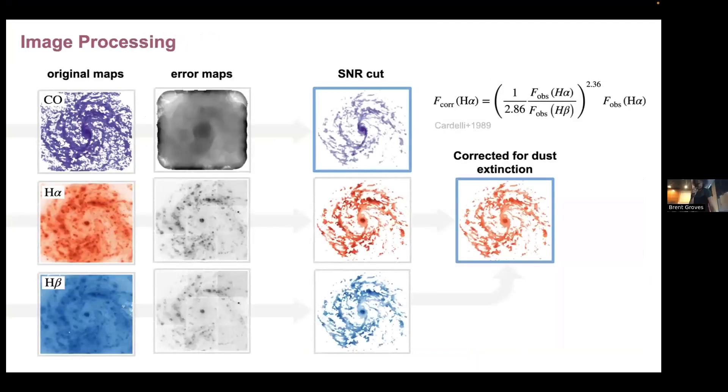So before starting to work with these images, these PHANGS images, we did a pre-processing. We used the original CO, H-alpha, and H-beta maps. Each one of them has an error map, so what we did was we kept the emission above three times the error, basically. We also corrected for dust extinction the H-alpha images.